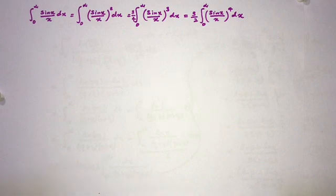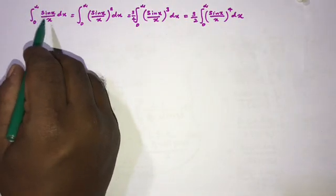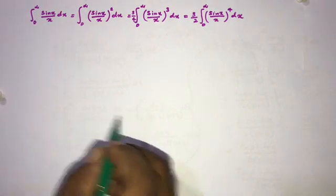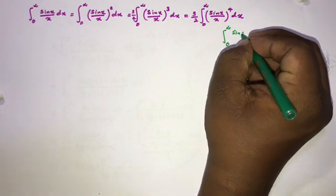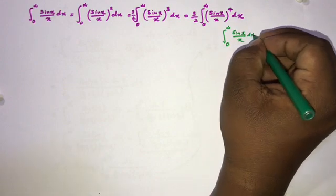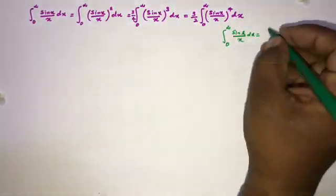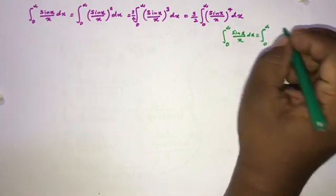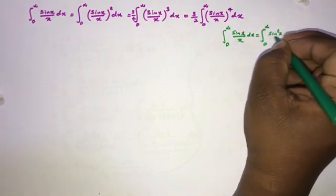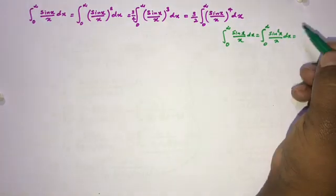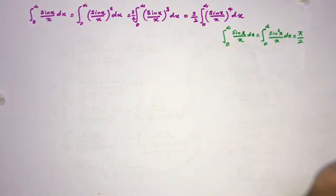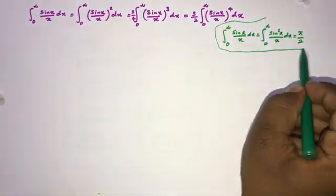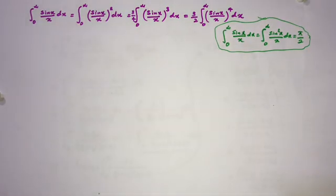First, we have the integral from zero to infinity of sin(x)/x dx, a well-known integral. There is also a second well-known integral. If you integrate them, the answer is π/2. In this video I am going to use this fact without re-evaluating it, since it is a well-known result.